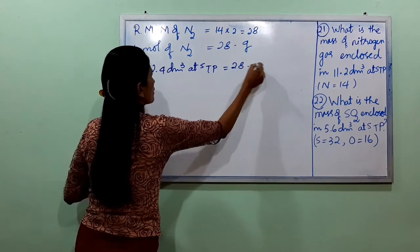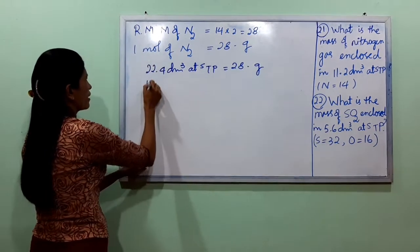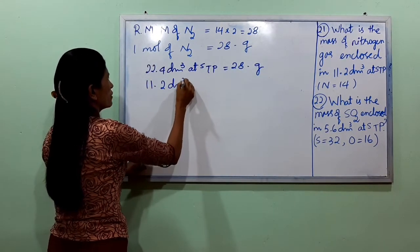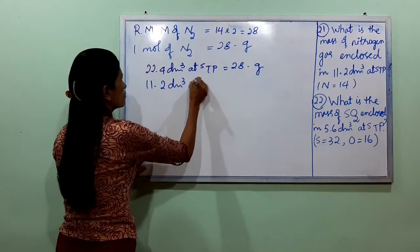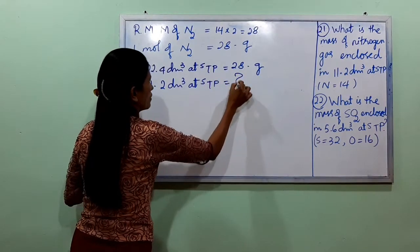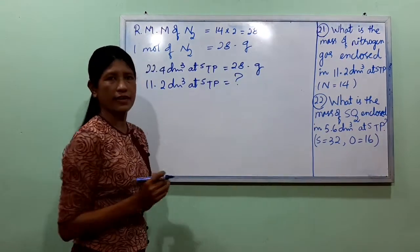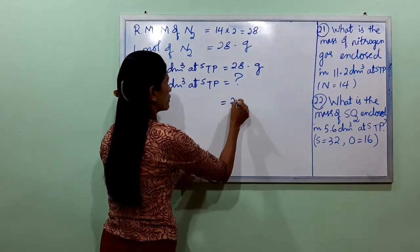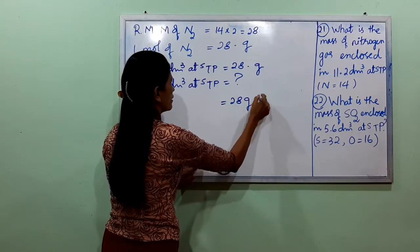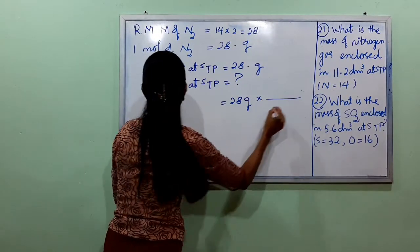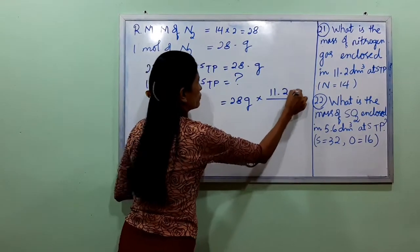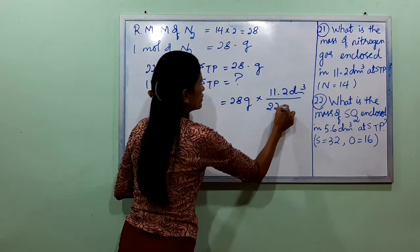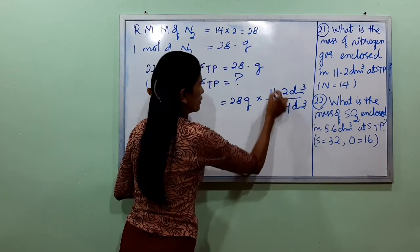The molar mass of N₂ is 28 grams per mole. So for 11.2 dm³: mass equals 28 grams multiplied by 11.2 dm³ divided by 22.4 dm³.